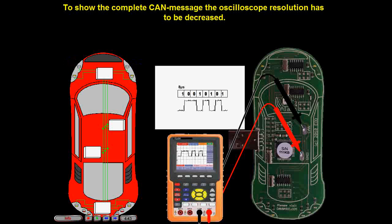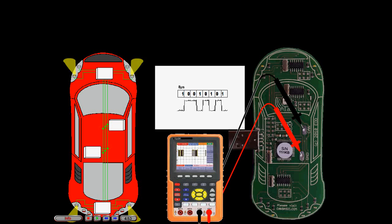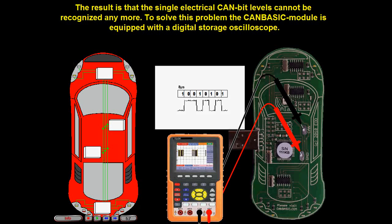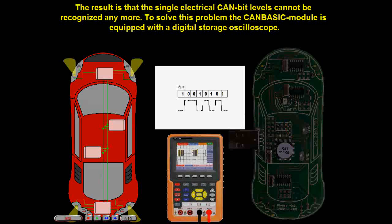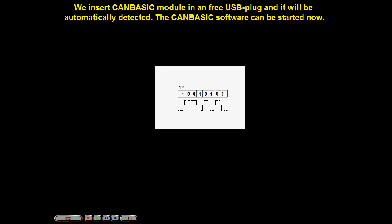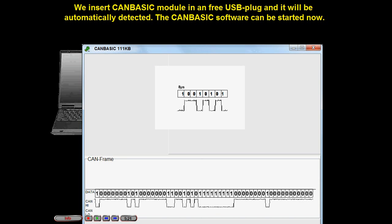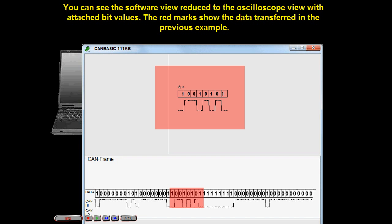To show the complete CAN message, the oscilloscope resolution has to be decreased. The result is that the single electrical CAN bit levels cannot be recognized anymore. To solve this problem, the CAN-BASIC module is equipped with a digital storage oscilloscope. We insert the CAN-BASIC module into the USB plug and it will be automatically detected. The CAN-BASIC software can be started now. You can see the software view reduced to the oscilloscope view with attached bit values. The red marks show the data transferred in the previous example.